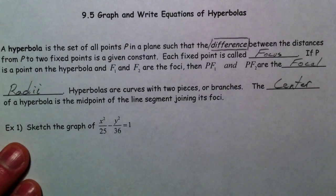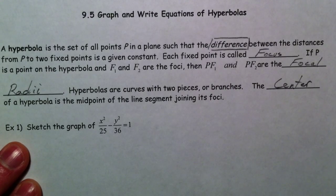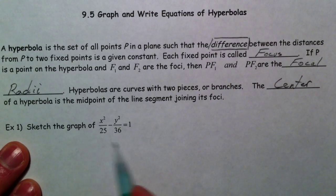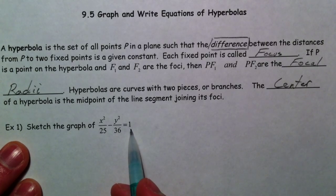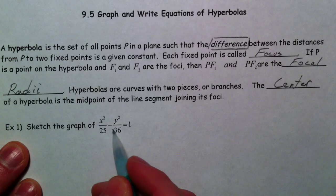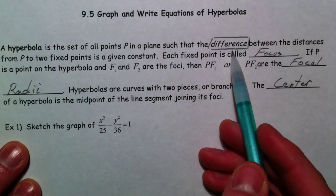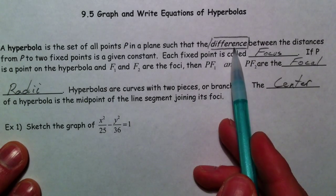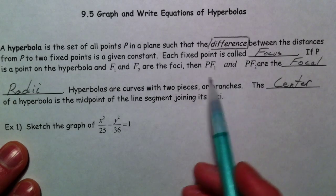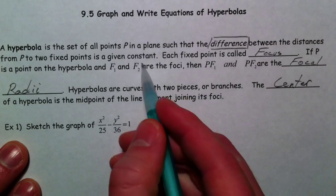All right, now to talk about graphing and writing equations of hyperbolas. A hyperbola equation, if you look down here, kind of looks like an ellipse equation, still set equal to 1. The big difference being it's subtracted, and that is because now it's the set of all points in a plane, so that the difference, if you subtract the distance to the one focus from the distance to the other focus, that's what remains constant.